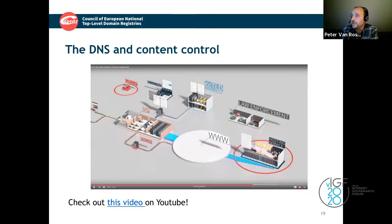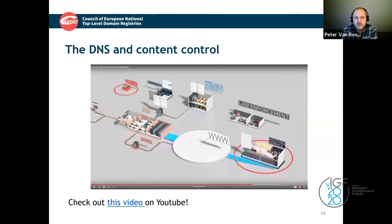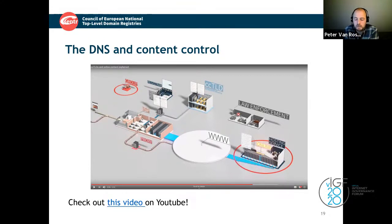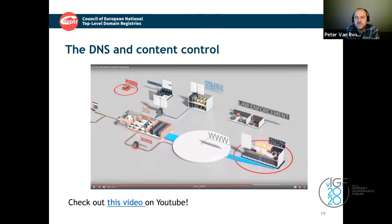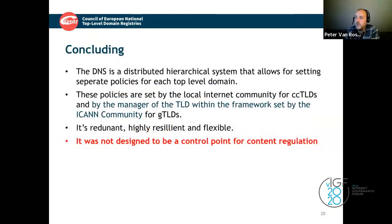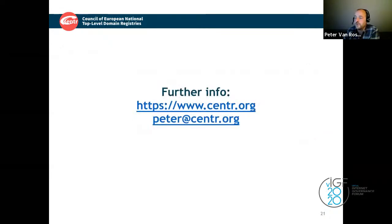DNS was built so people can trust the answers they receive — critical for things like banking online. We have a video explaining this complex story about DNS and content control. This will be an essential part of upcoming regulatory and policy discussions. To add one final point to my conclusion: the DNS is not designed to be a control point for content regulation. Further info at centr.org or email peter@centr.org.